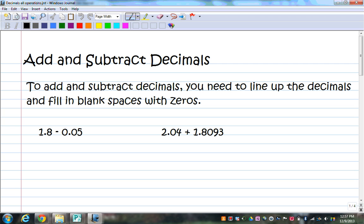The one thing that you need to remember is that you must line up the decimals. So, this first problem, I have 1.8 minus 0.05. When I set this up, 1.8, I'm going to subtract 0.05. The second thing that I have up here is fill in the blank spaces with zeros, meaning this spot right here, I'll put a zero in there.